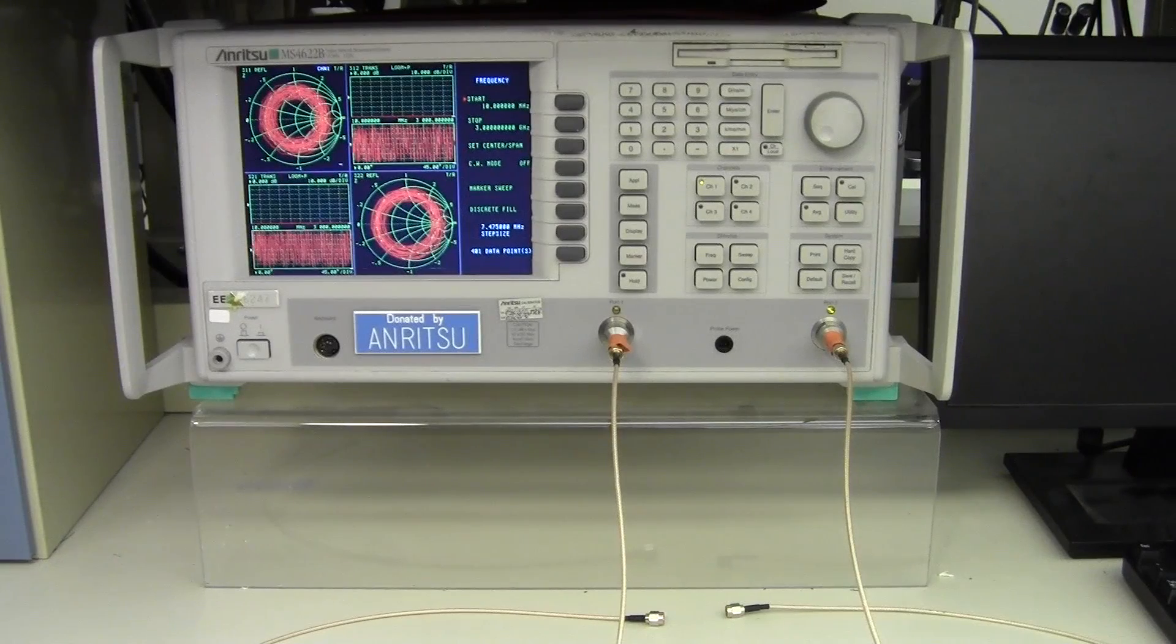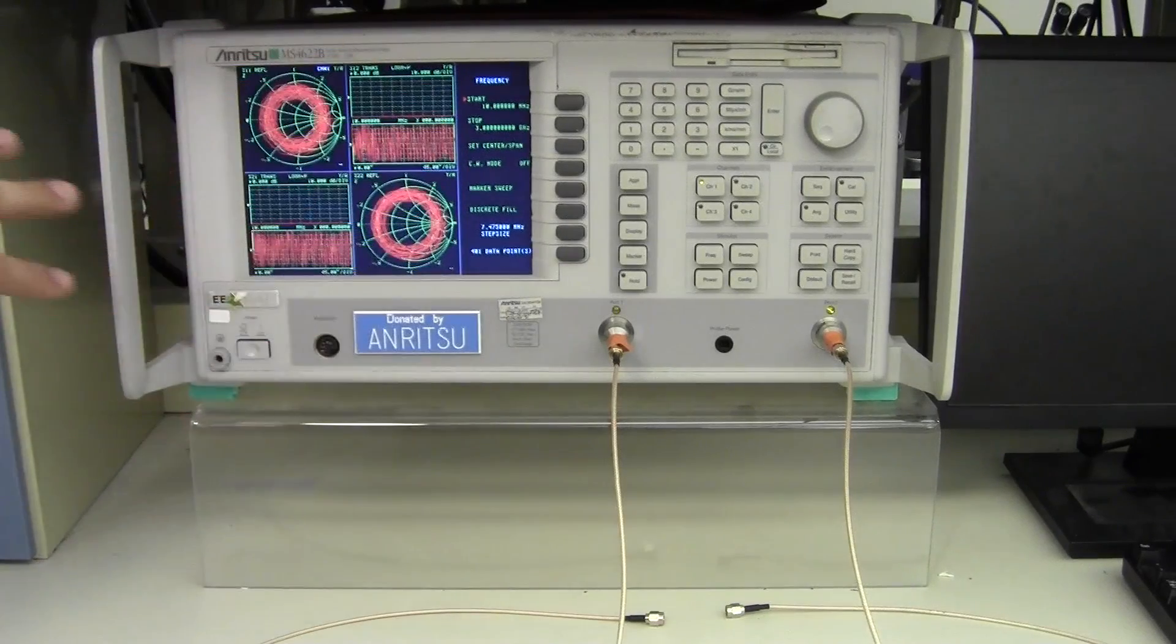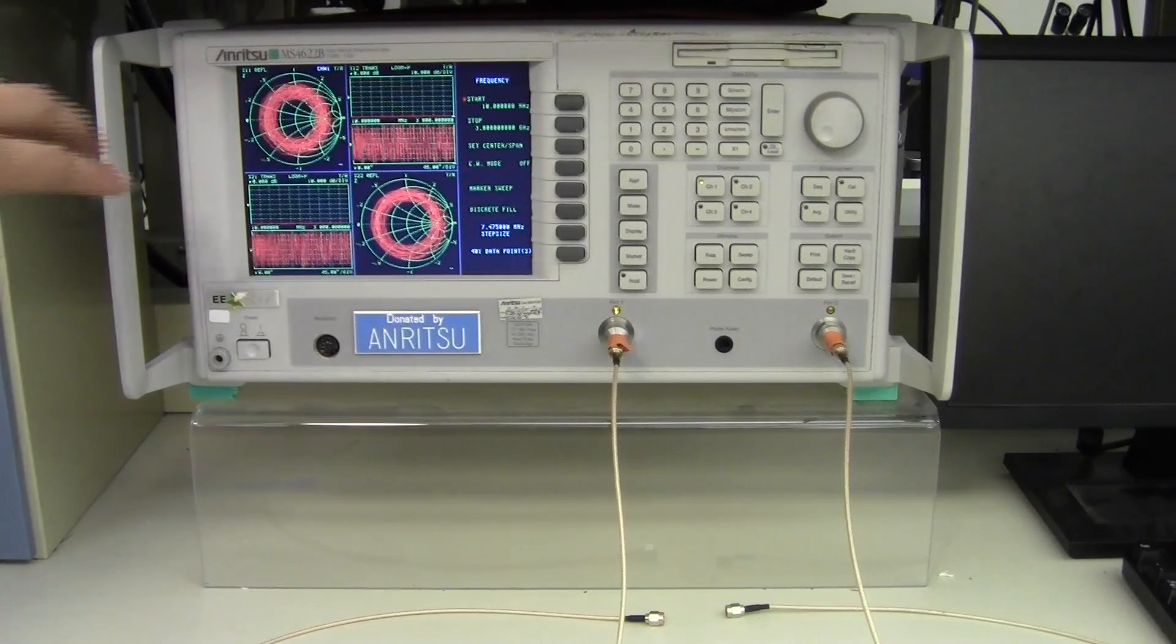We're looking at one of the two port Vector Network Analyzers. In our lab we have four two port and two three port Vector Network Analyzers for more sophisticated tests. When you first power it up, you're looking at a full display that shows all four transmissions.